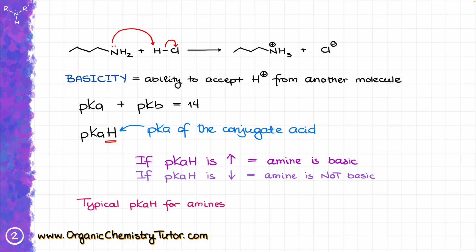The typical pKaH values for amines are going to be somewhere between 9 and 10, although they can sometimes drop as low as 4 to 5, which is actually comparable to carboxylic acids. It really depends on the molecule itself, and we are going to see many different examples where the pKaH value can vary greatly. Now let's talk about the different factors that actually affect the basicity of amines.